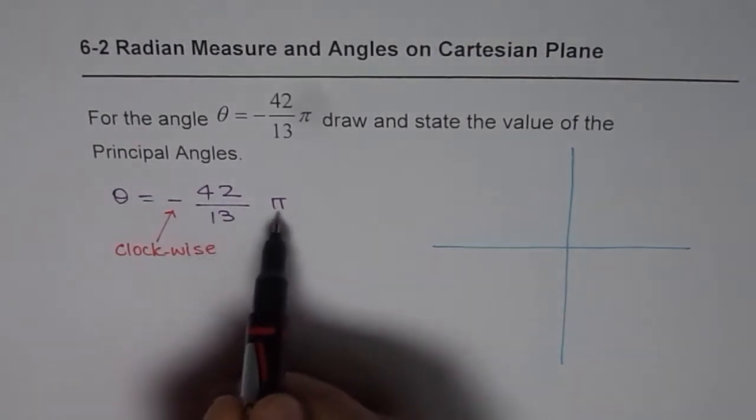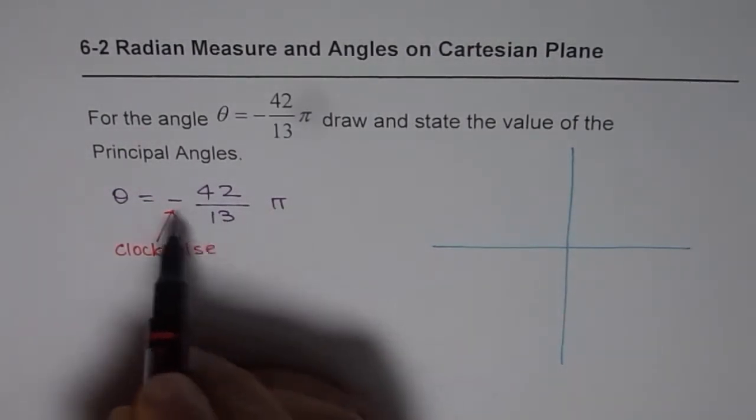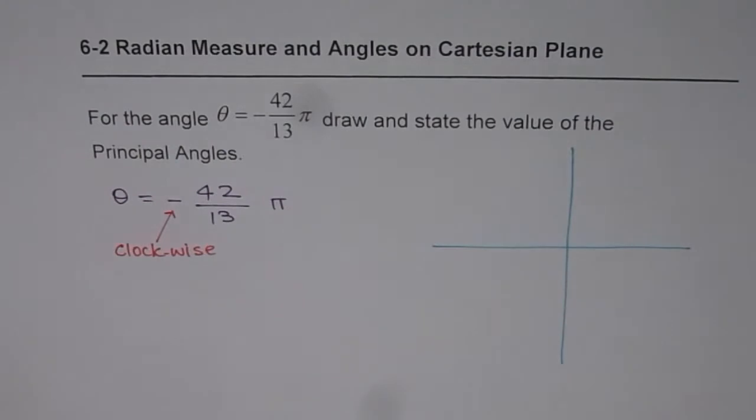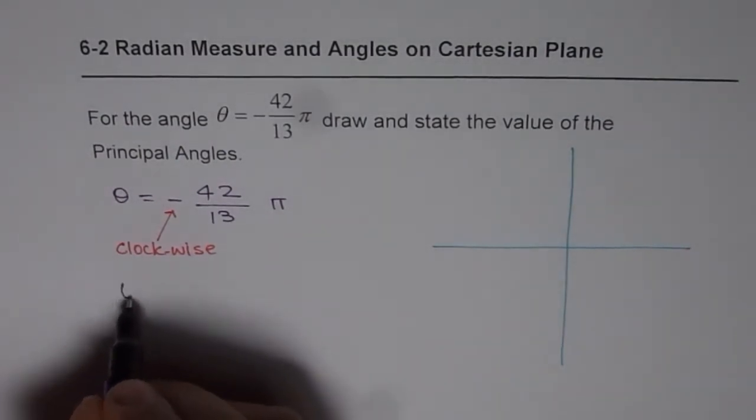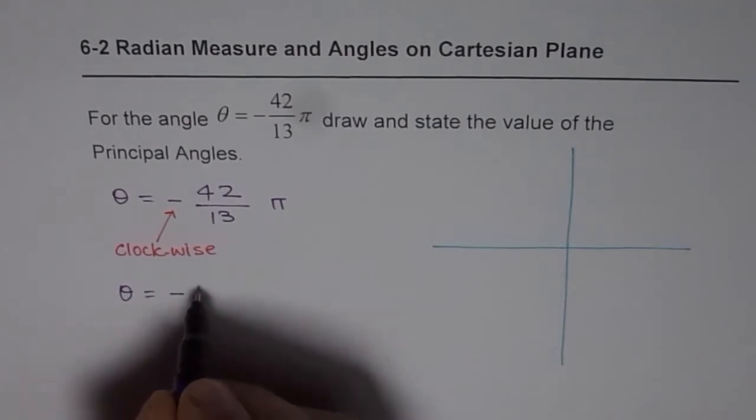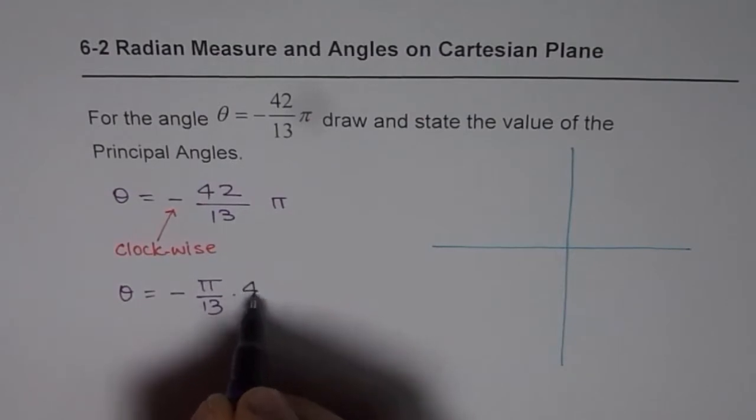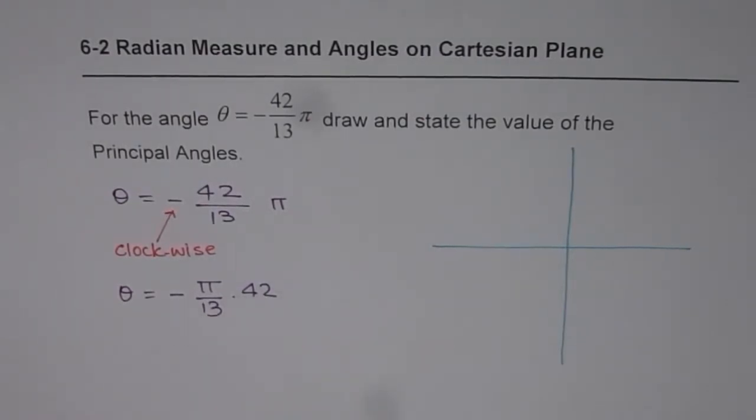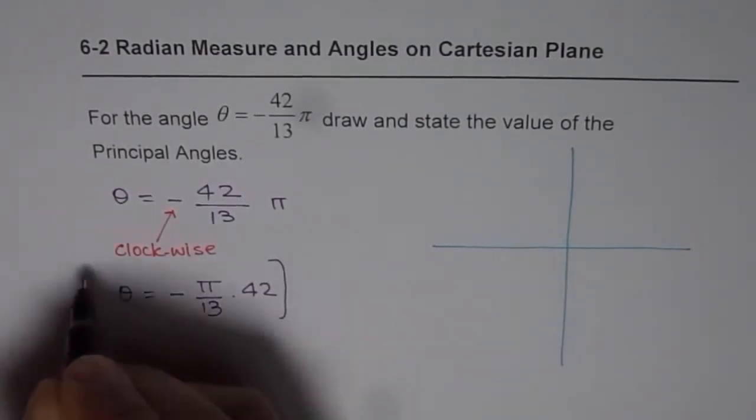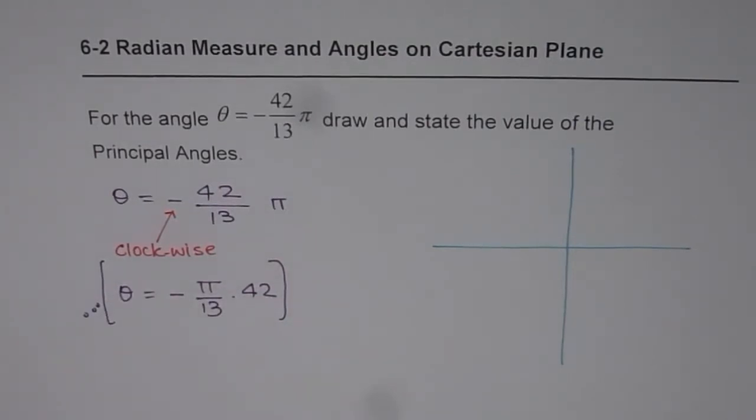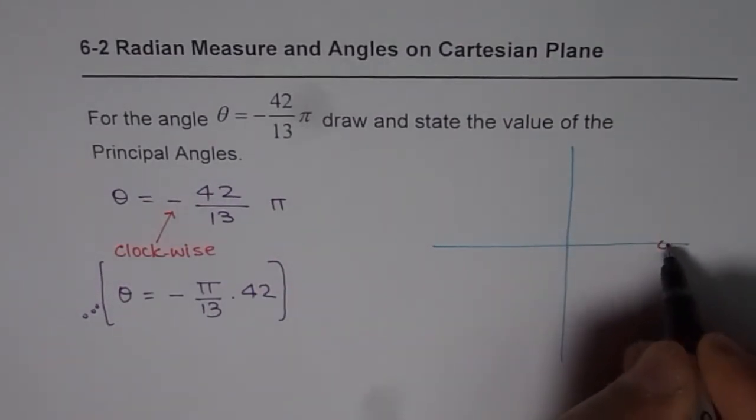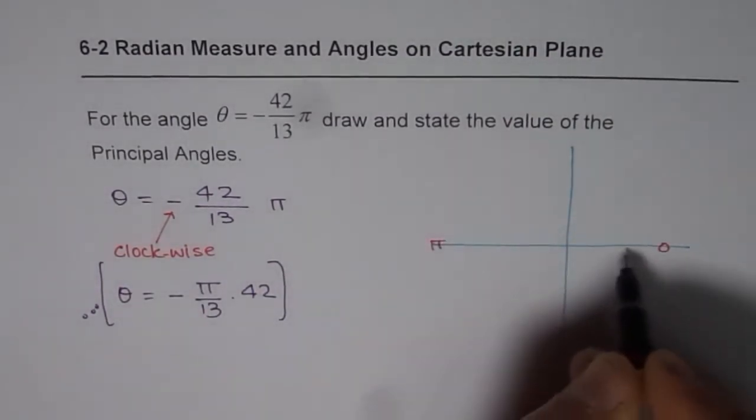Now when we have a fraction π over 13, you can treat this equation as, let me rewrite this equation. Treat θ as equals to minus, there are 13 portions of the π and you have to go for 42. So that is how you have to think. So what I am trying to say here is that this is my π, 0 to π. So this much is π.